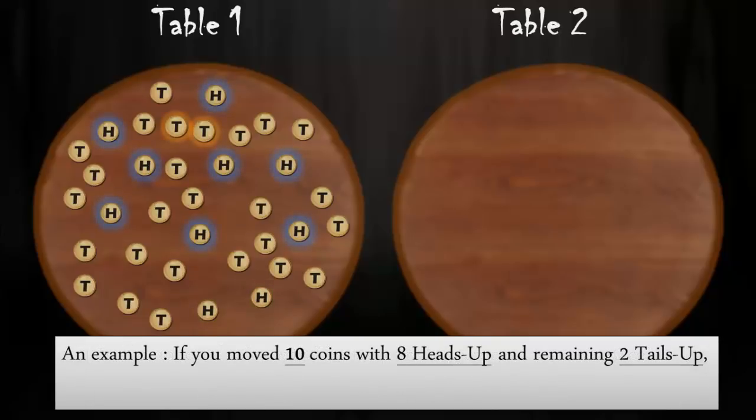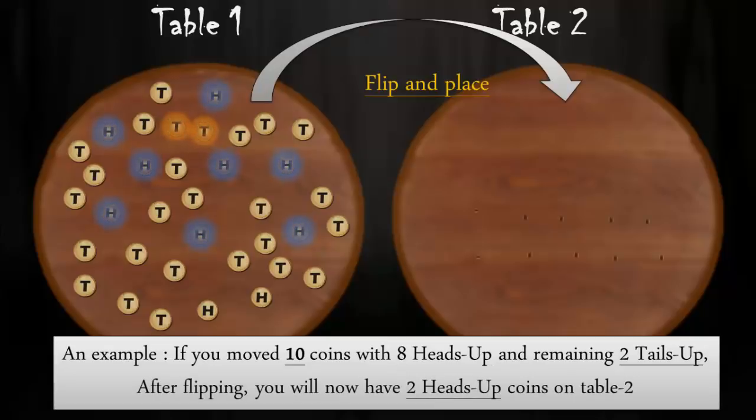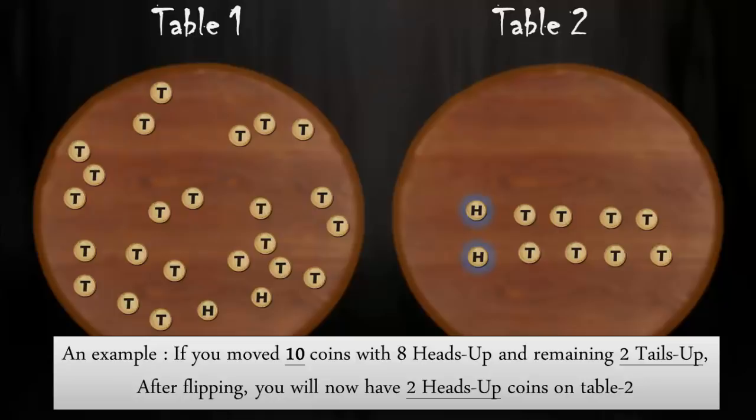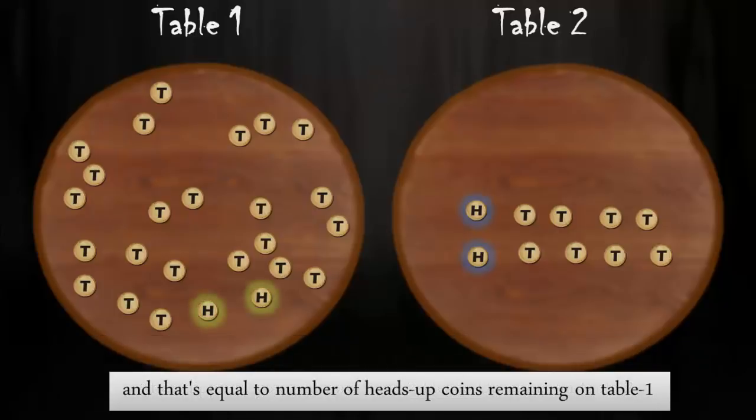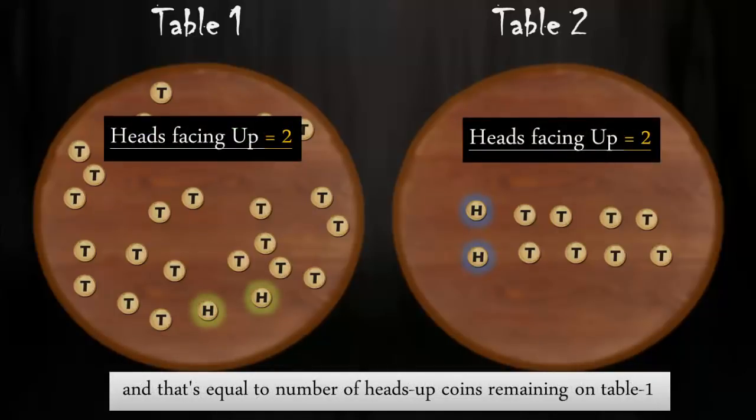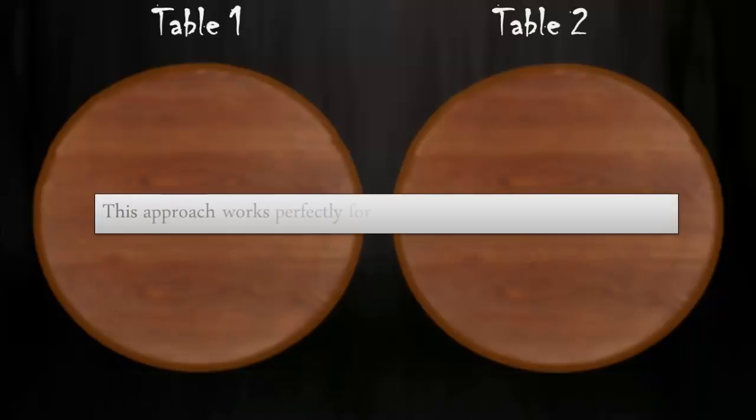For example, if you move 10 coins with 8 heads up and remaining 2 tails up, after flipping, you'll now have 2 heads up coins on table 2 and that's equal to the number of heads up coins remaining on table 1. This approach works perfectly for any combination of coins you move.